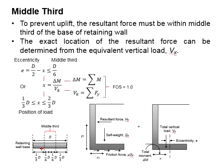Middle third refers to the middle one-third portion of the base. The total vertical load, VK, has to fall somewhere in between the middle third. This gives us these equations, where X has to be between one-third to two-thirds D.